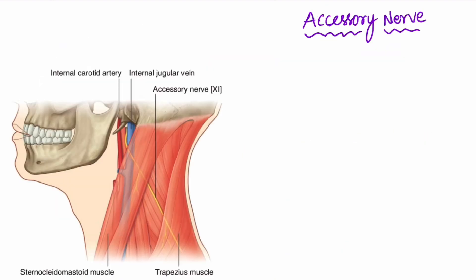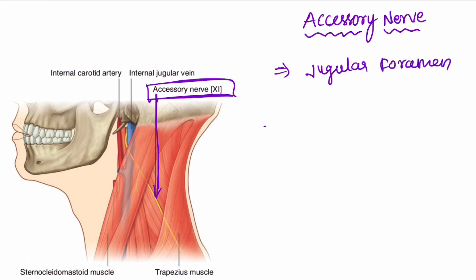The accessory nerve exits the cranial cavity from the jugular foramen. It innervates the sternocleidomastoid muscle and also the trapezius muscle.